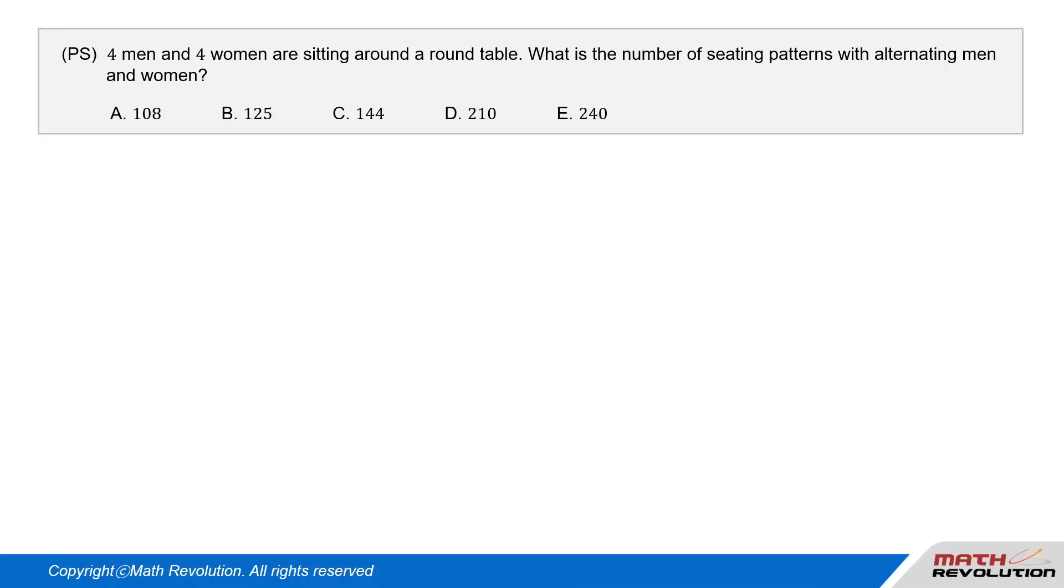Question 3, P.S. Four men and four women are sitting around a round table. What is the number of seating patterns with alternating men and women?